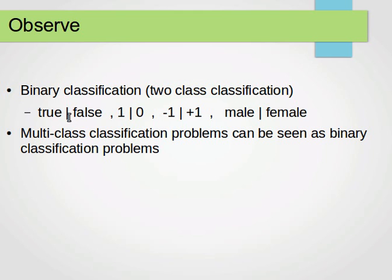Yes or no, true or false, 1 and 0, male or female — we always have two classes only. And in general, any multi-class classification problem can be treated as, or can be reduced to, a binary classification problem.